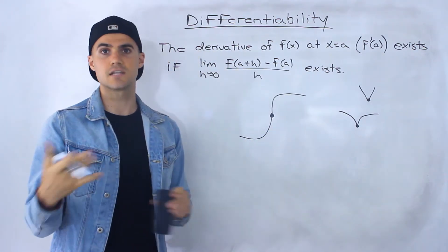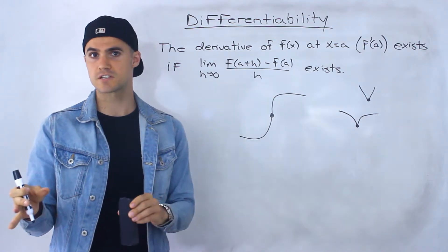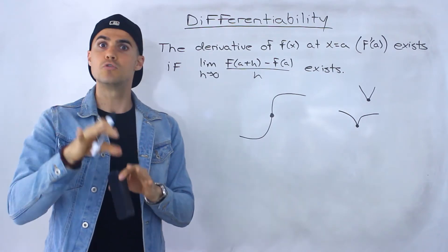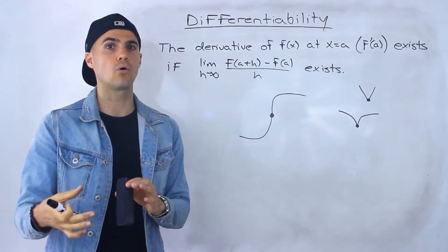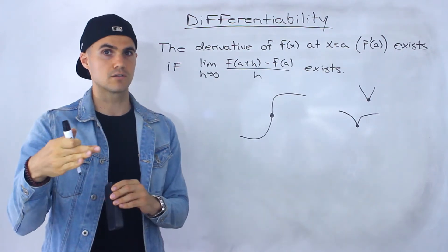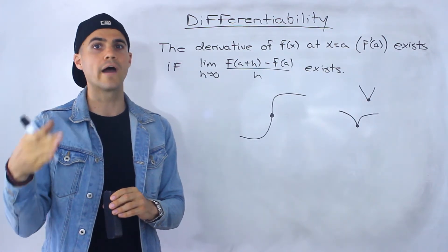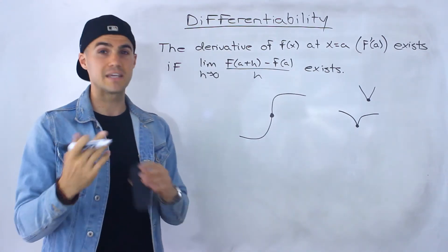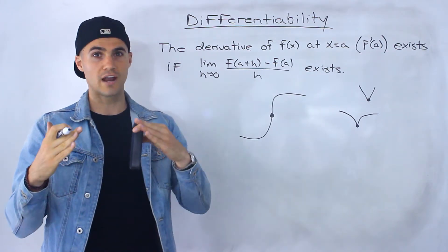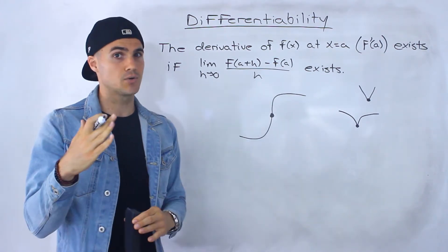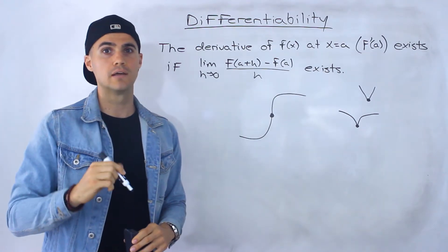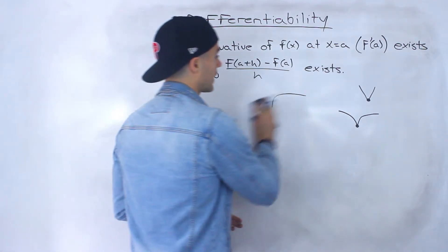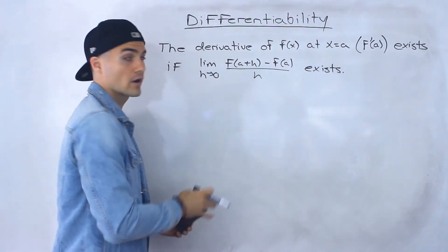We'll also cover discontinuous functions. Remember, there are different types of discontinuity: there's infinite discontinuity where there's a vertical asymptote, there's removable or point discontinuity where a function has a hole, and then there's also jump discontinuity. We'll be showing why a derivative doesn't exist for all three of those cases. We'll also cover certain piecewise functions, where you can have a piecewise function that is continuous, but at that continuous meeting point the derivative can still not exist.